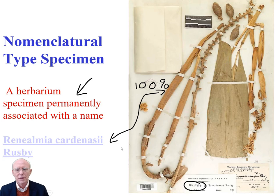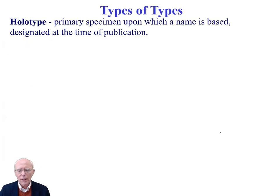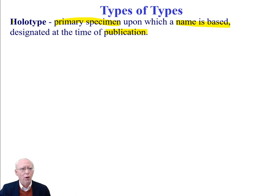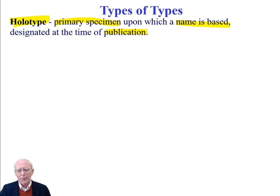All nomenclature, including zoological nomenclature, works the same way. The holotype is the primary specimen on which the name is based. This is the specimen that the collector went into the field to collect, dried it, deposited it in a herbarium, and then published that name, designating this herbarium specimen as the repository of the name. That type of type is called the holotype — it is the one we are 100% certain of. Other applications of the name are based on comparison and will never be as certain as the holotype.